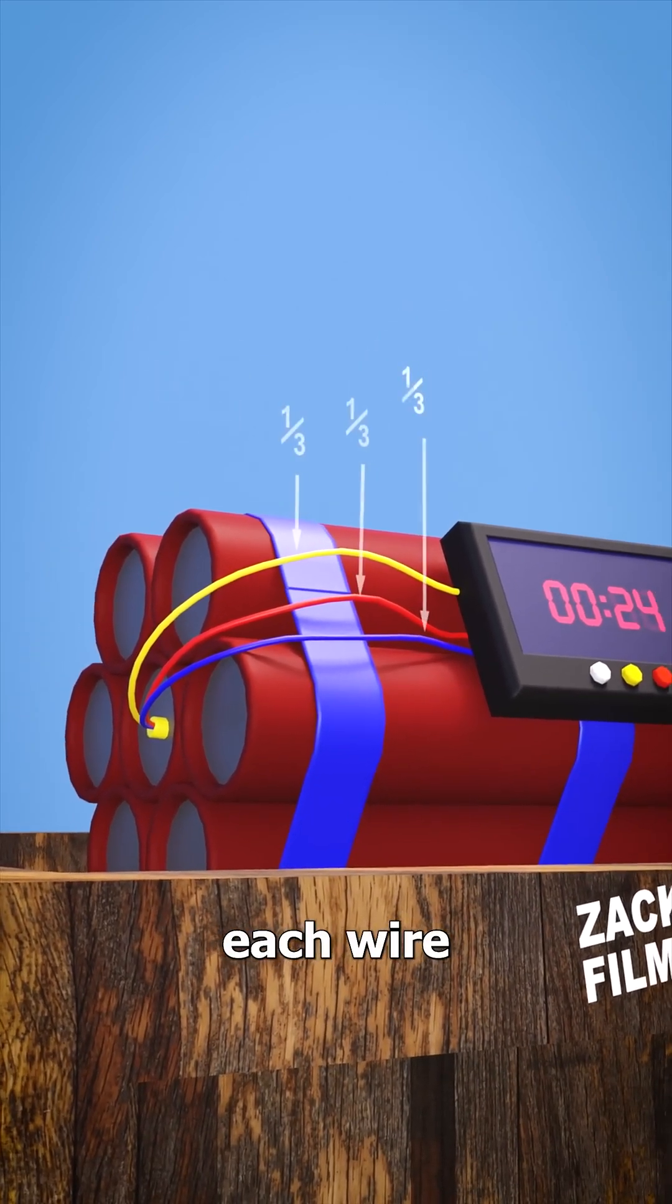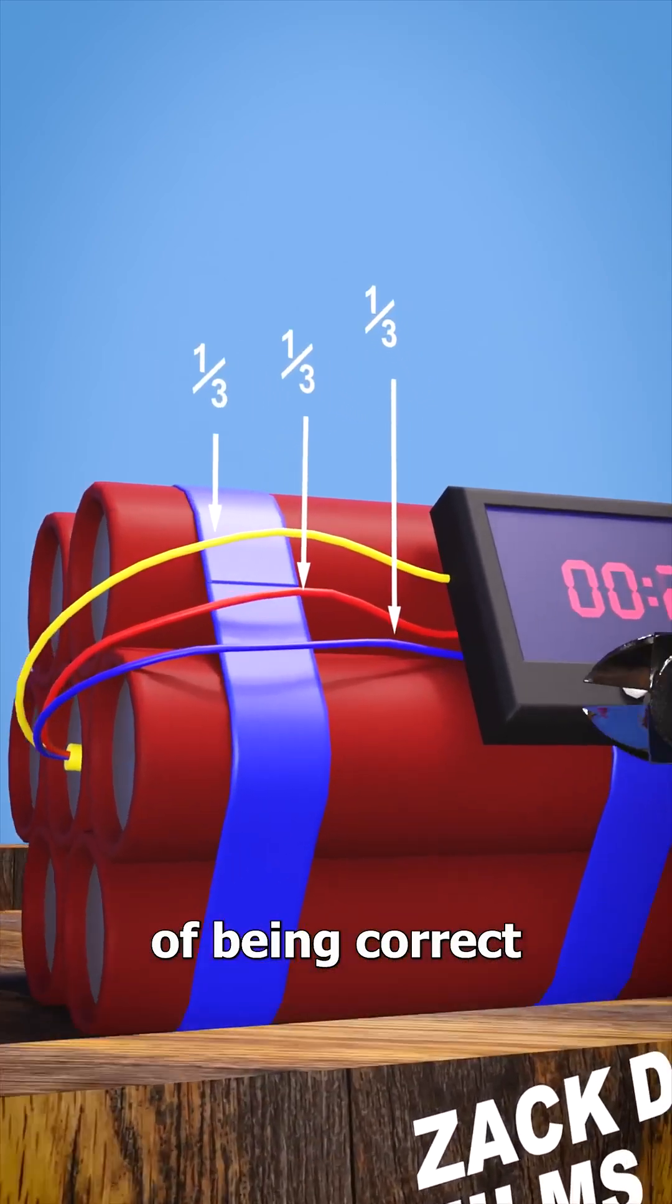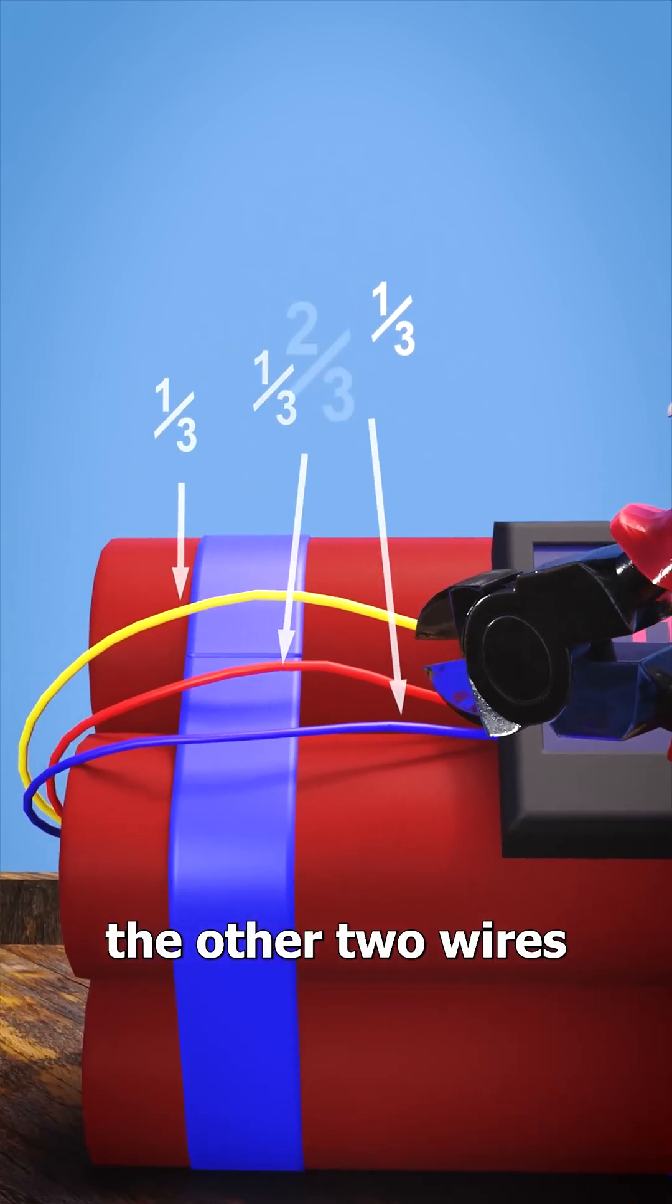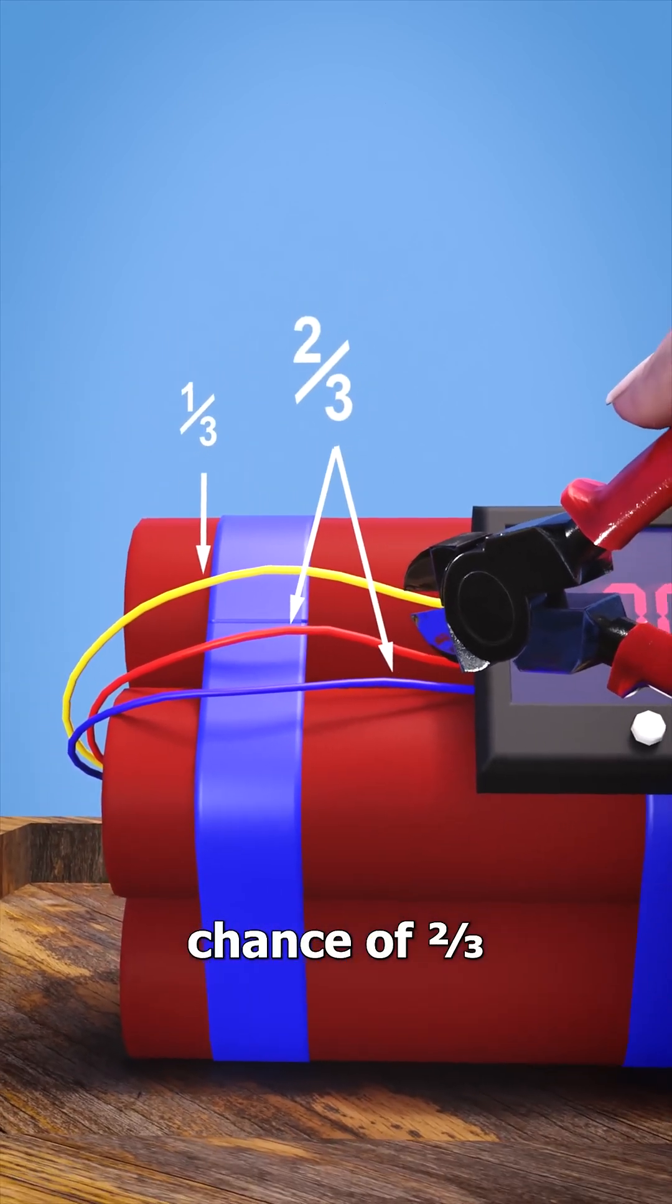In the beginning, each wire had a one-third chance of being correct. When you chose yellow, the other two wires had a combined chance of two-thirds.